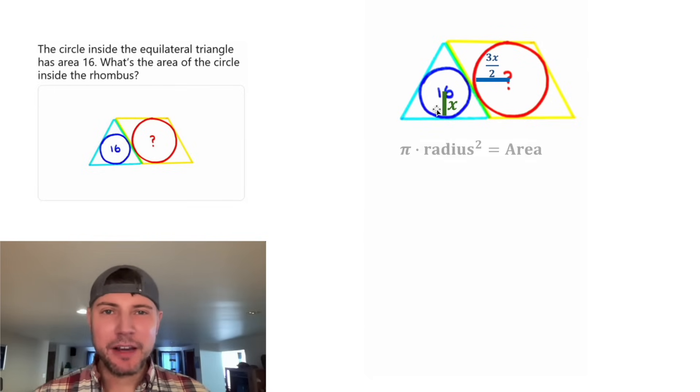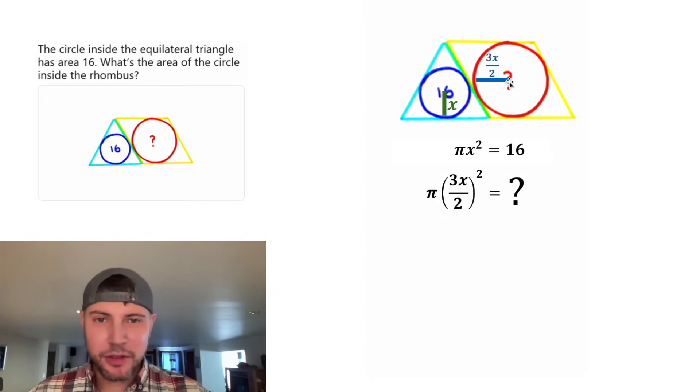For a circle, it's pi radius squared equals area. So for this one, we'll say pi x squared equals 16. And for the other circle, we'll say pi 3x over 2 squared equals question mark. And let's change it to this question mark.